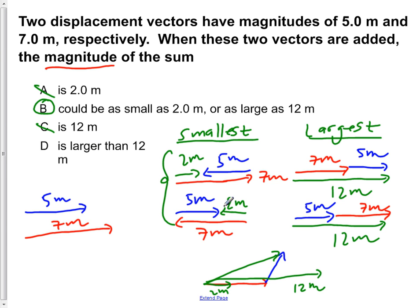And D states is larger than 12 meters. Well, we've shown that the largest possible value we can get is 12 meters. So D is also wrong. Therefore, after we do a process of elimination and go through this again, we see B is correct. The magnitude of the vector sums could be as small as 2 meters or as large as 12 meters.